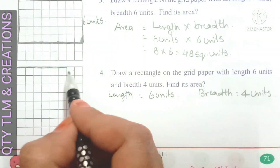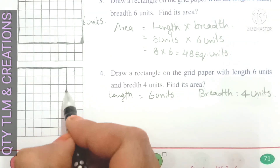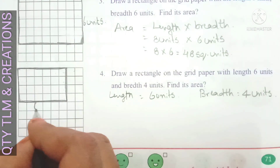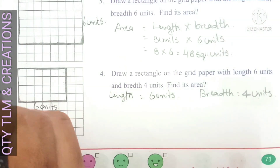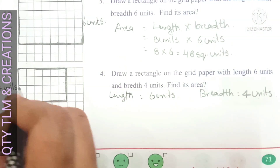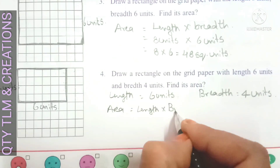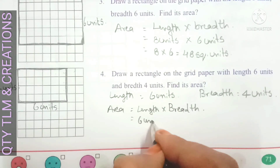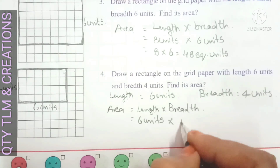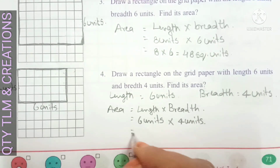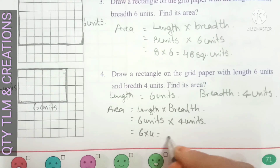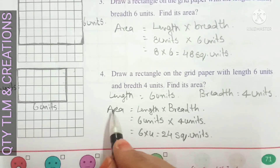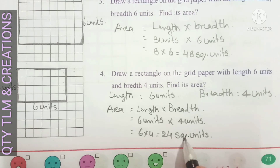Breadth is equal to four units: one, two, three, four. So length is equal to six units and breadth is equal to four units. Area is equal to length into breadth, that is six units into four units, which is six into four equals 24 square units. So the area of the rectangle is equal to 24 square units.